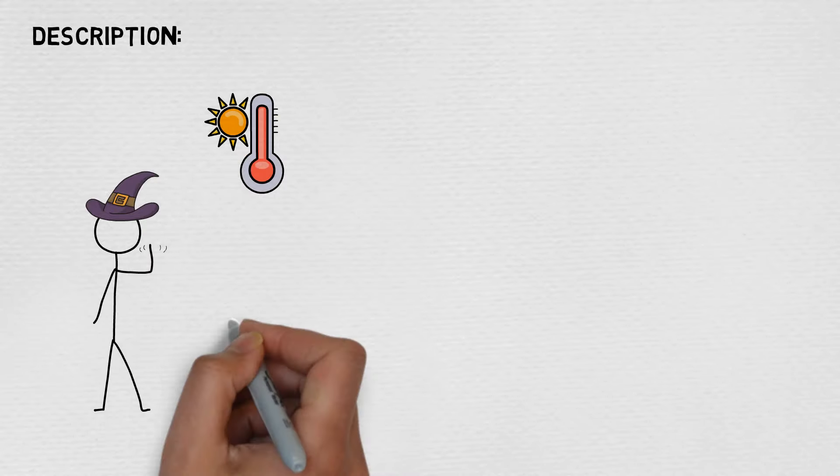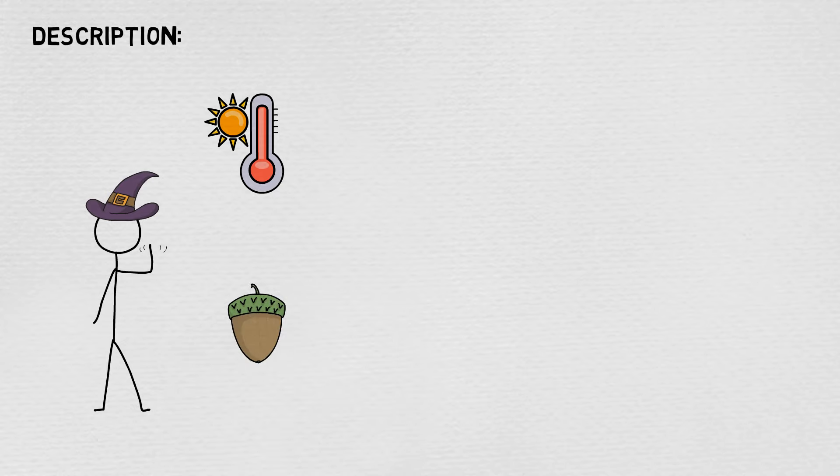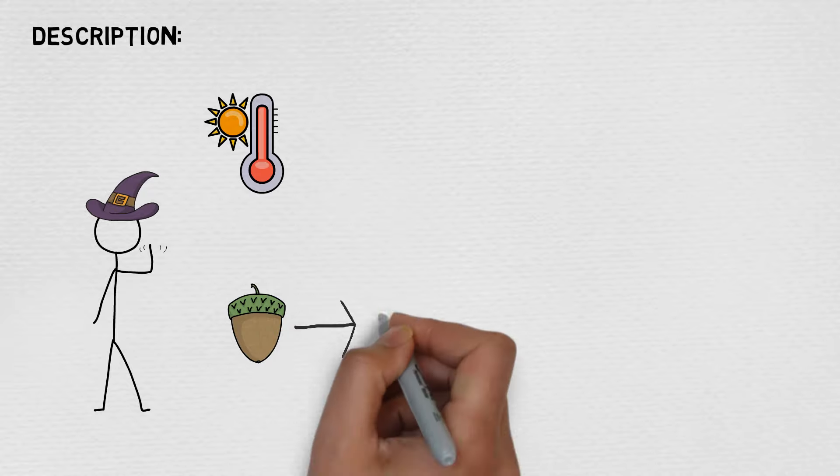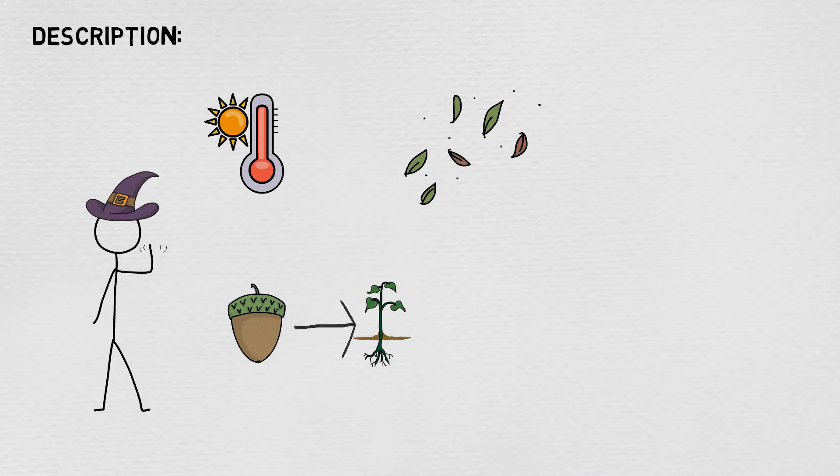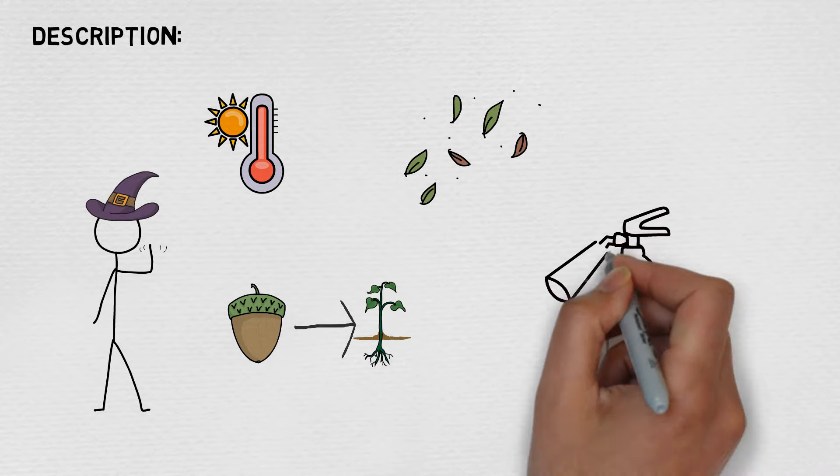You instantaneously make a flower blossom, a seed pod open, or a leaf bud bloom.